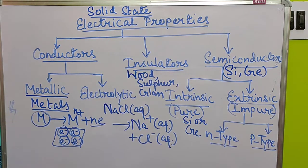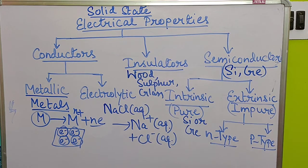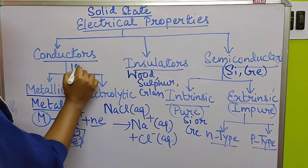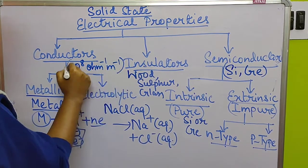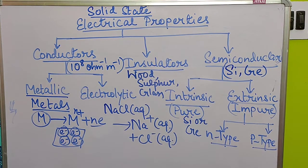First, copy the classification chart. Then I will describe their conductivity level in terms of band theory. For metals (mainly metallic conductors), the conductivity value is in the range of 10⁸ ohm⁻¹ metre⁻¹.